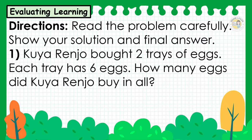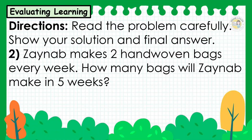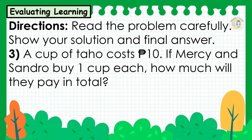Read the problem carefully. Show your solution and final answer. Number 1: Kuya Rangjo bought 2 trays of eggs. Each tray has 6 eggs. How many eggs did Kuya Rangjo buy in all? Number 2: Zainab makes 2 hand-woven bags every week. How many bags will Zainab make in 5 weeks? Number 3: A cup of taho costs 10 pesos. If Mercy and Sandro buy 1 cup each, how much will they pay in total?